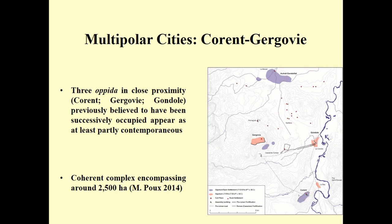Another example of the complexity of Iron Age settlement landscapes that requires us to rethink previous models: Mathieu Poux has been carrying out extensive research in the area of Corent, in Auvergne, France. Here we have three Opida in close proximity — Corent, Gondole, Gergovie. Previously it was believed there was a chronological décalage: one was created, then abandoned, then they moved to the next. New research suggests they were at least partly contemporaneous. Poux suggested in a 2014 paper that we need to think of this as a complex settlement system encompassing a large territory, rather than thinking in terms of a single site.